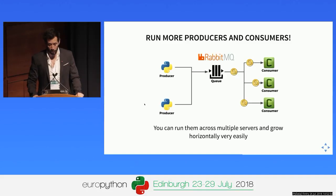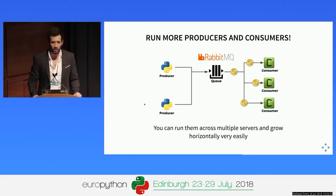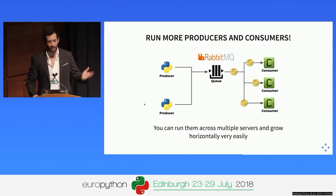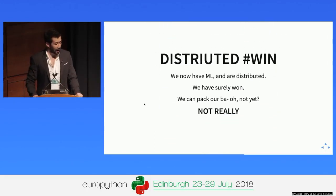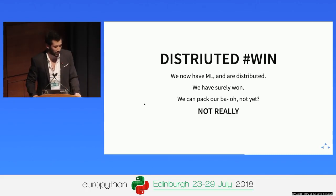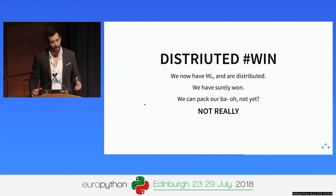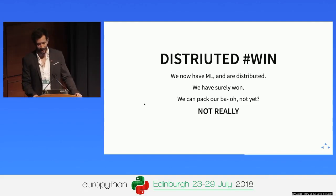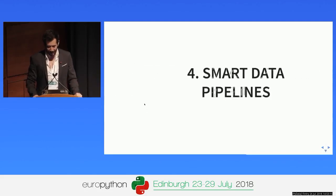The next thing is to run more producers and consumers. The CryptoML team Celery-ized their deep predict functions and got them running. So now we have a machine learning pipeline and we're distributed. Can we pack our bags? Not yet — it's not the end certainly. And that's where we jump into smart data pipelines.